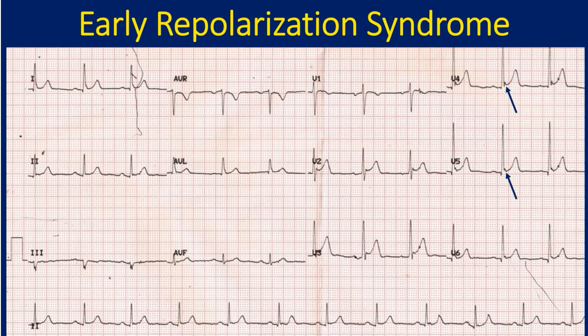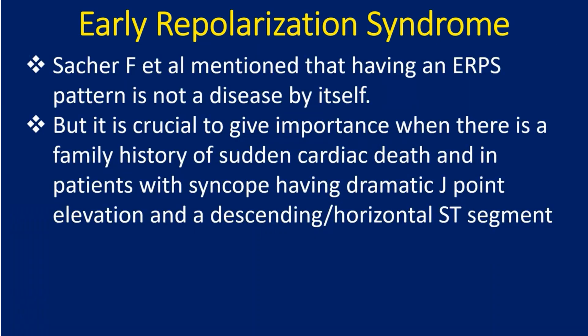ECG showing early repolarization syndrome: concave upwards ST segment elevation with notch at the end of the QRS complex, or a slurring of the terminal QRS seen in lateral leads, is characteristic of early repolarization syndrome. This one apparently belongs to Type 1 described above. Sacher and colleagues mentioned that having an ERPS pattern is not a disease by itself, but it is crucial to give importance when there is a family history of sudden cardiac death and in patients with syncope having dramatic J point elevation and a descending or horizontal ST segment.